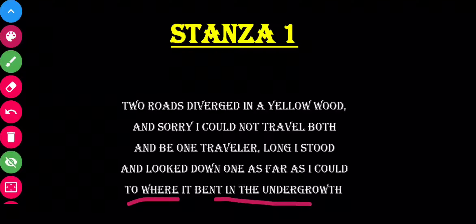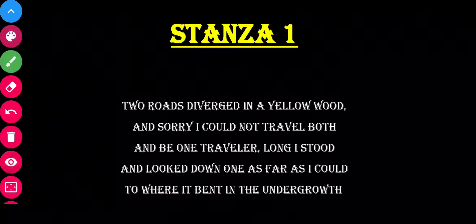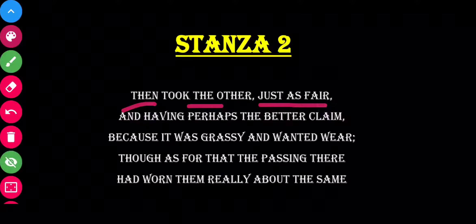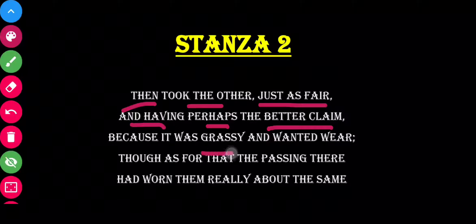'Where it bent in the undergrowth' — the poet was looking for the path. 'Undergrowth' means the grass around the path. Because of the grass, the path was not clearly visible where it bent — his vision was not clear beyond that point. Then in stanza 2: 'Then took the other, just as fair, and having perhaps the better claim' — I had to choose one path, and I chose the other path, thinking it was better for me.